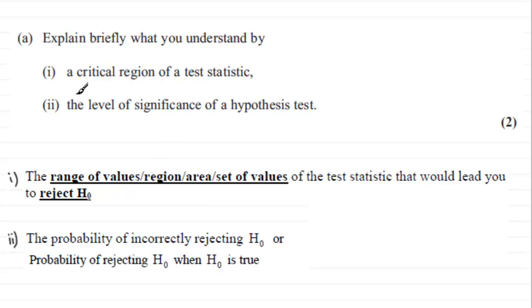And in part two, we've got to explain what we understand to be the level of significance of a hypothesis test. Well, that's going to be the probability of incorrectly rejecting the null hypothesis. Or you could say the probability of rejecting the null hypothesis when the null hypothesis is true.